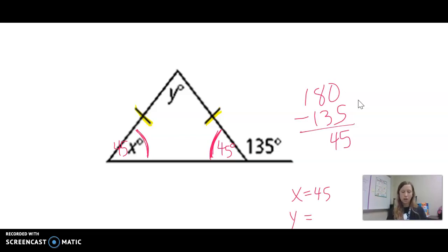Now we just have to find y. We use our theorem that states that the three angles inside of a triangle add up to 180. So 180 minus 45 minus 45, subtracting the two angles inside the triangle that I already know, and we end up with 90. So y is 90.